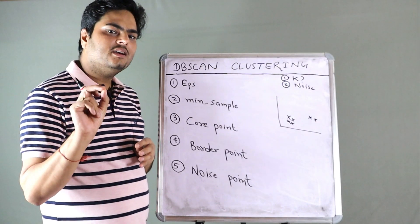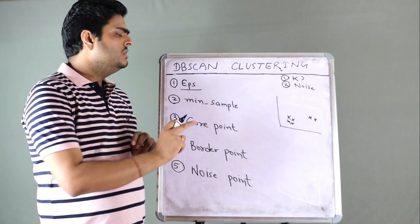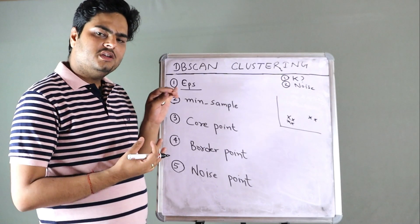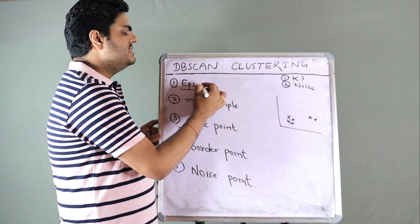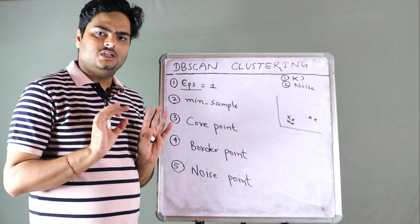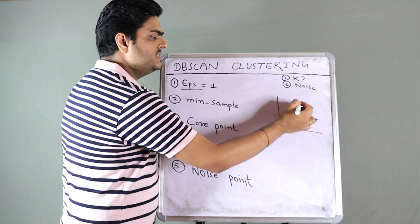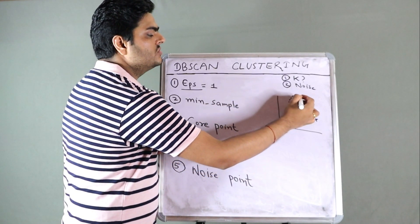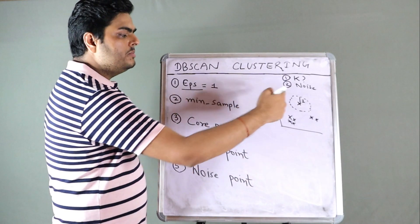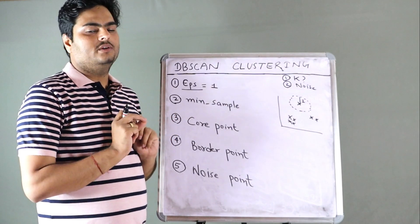To define closeness, an important parameter is known as epsilon, denoted as EPS. When you call this algorithm in Python you need to pass this parameter EPS. EPS is a number — for example, if I say this number equals one, consider it as a Euclidean distance. You take a point as the center and draw a circle with radius one. All the points inside this circle are defined as close to that point.